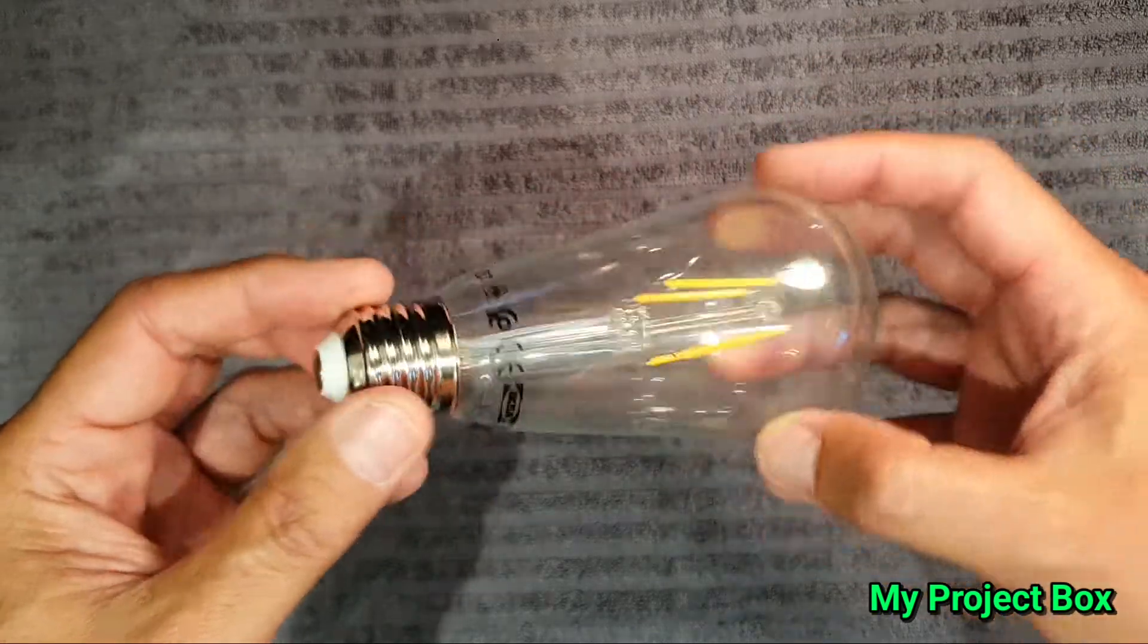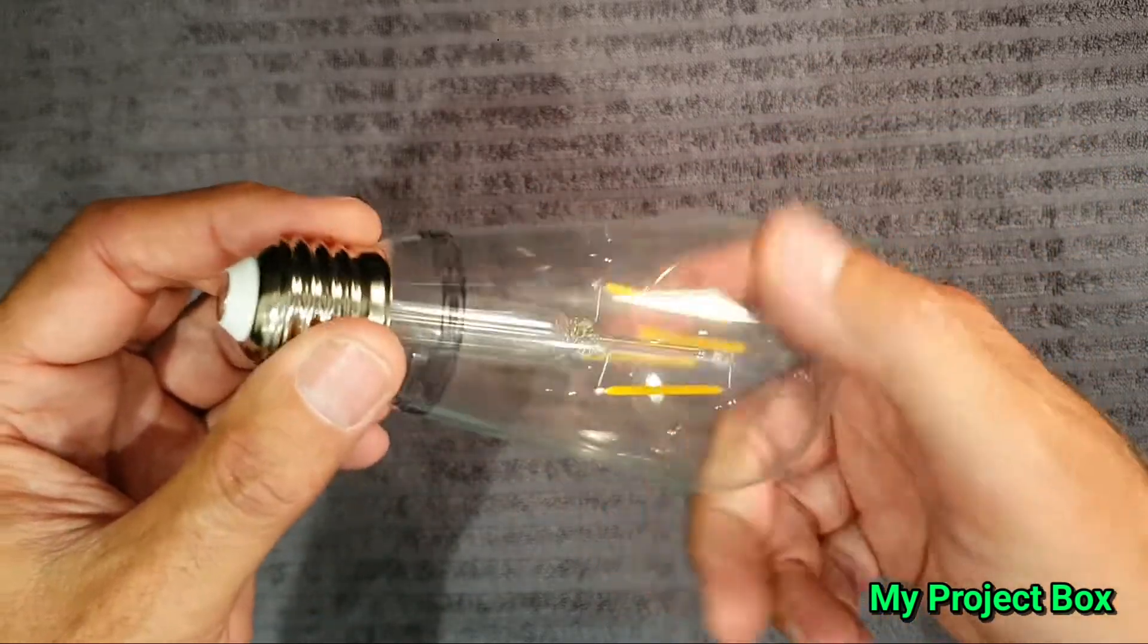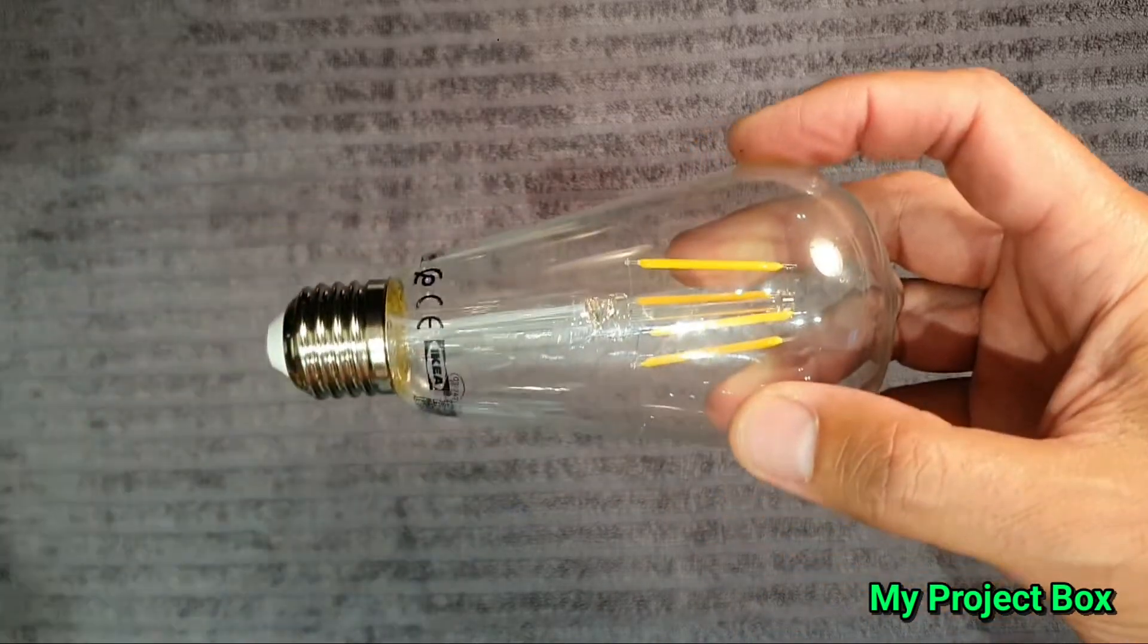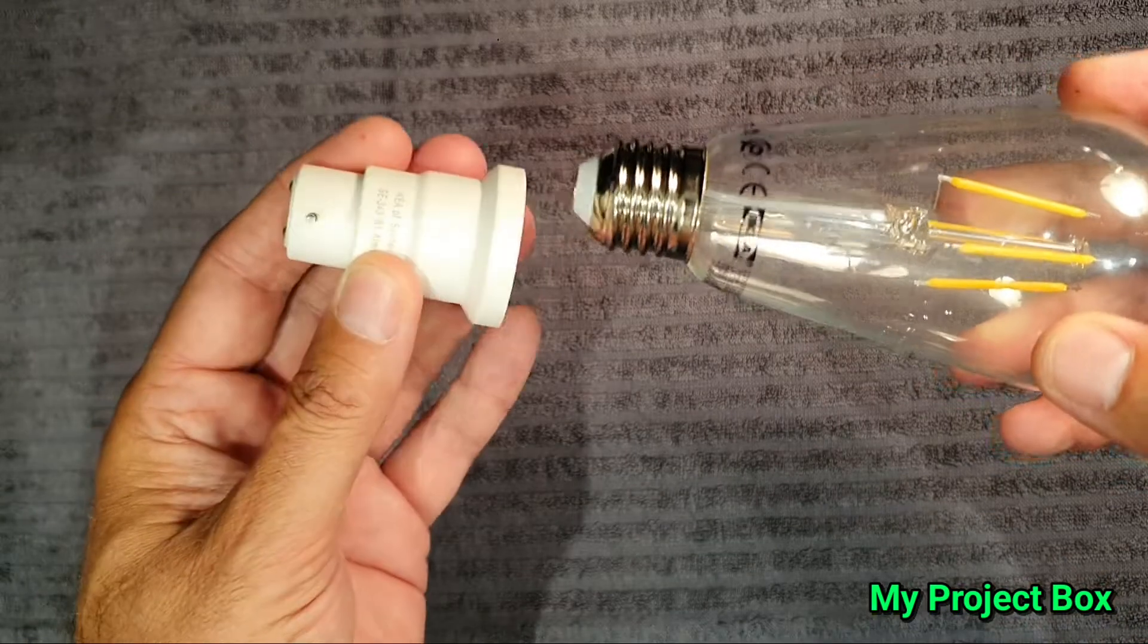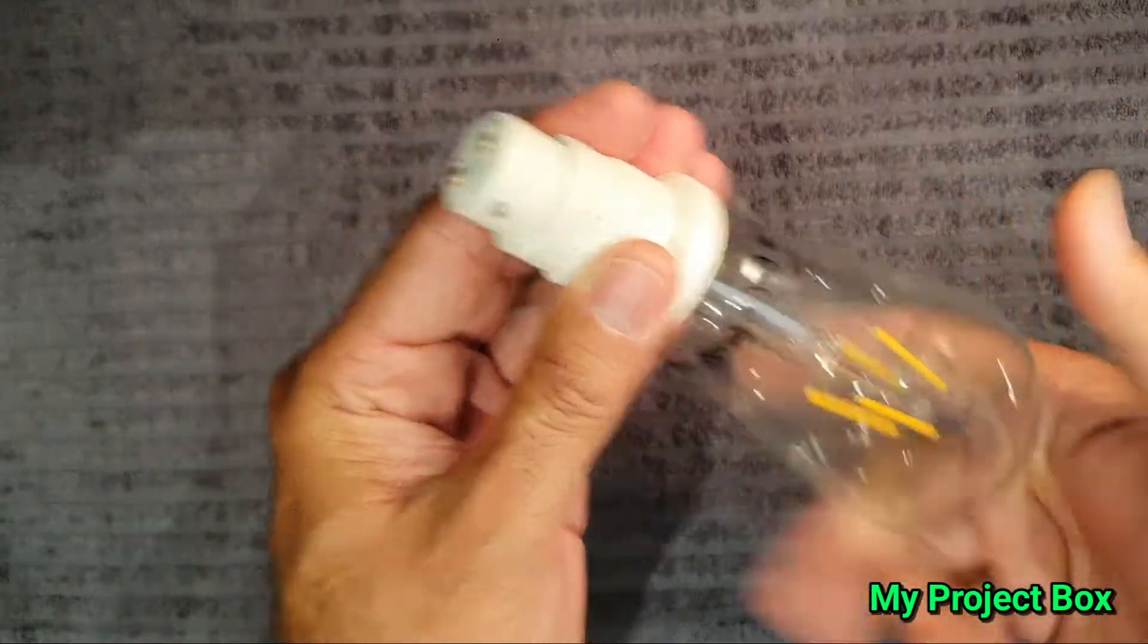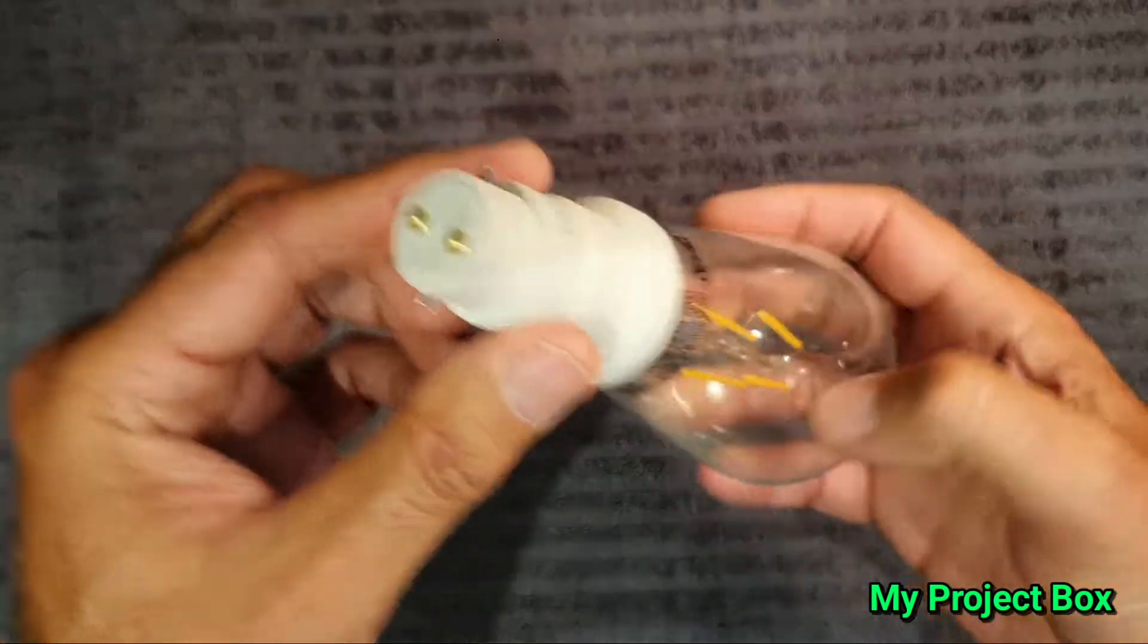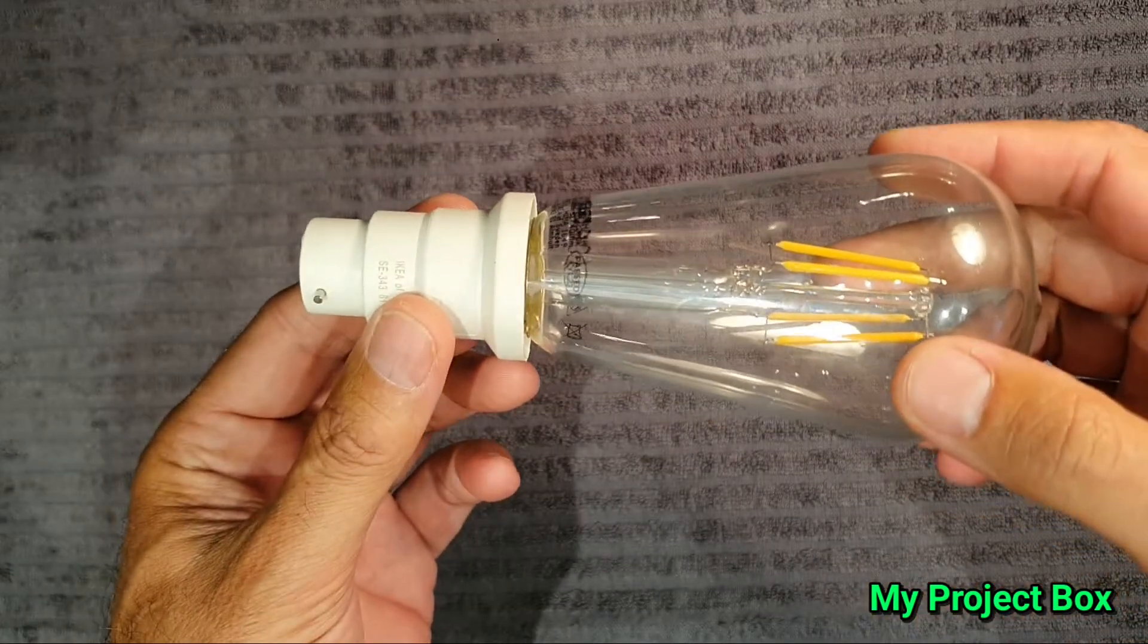The problem is you can't just go and screw it in into any light fitting because normally it would not fit. But luckily there exists adapters that you can buy that you just screw your Edison screw in and there you go, it's adapted and you can put it into a bayonet fitting.